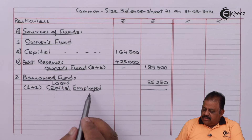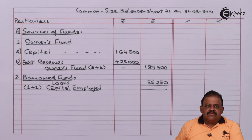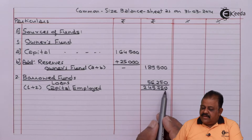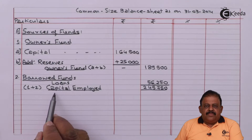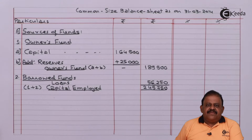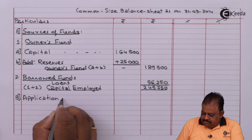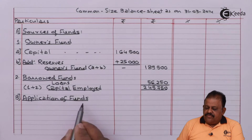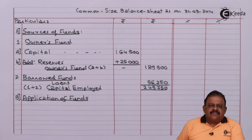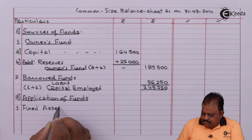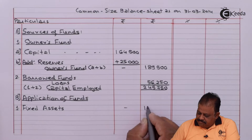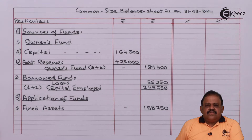We arrive at capital employed by adding owner's fund and borrowed funds. Total capital employed is 2,45,750. Under assets, the first item is fixed assets of 1,58,750. There are no long-term investments, so next will be working capital.